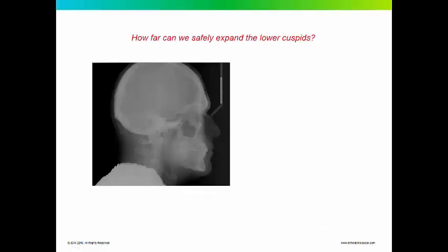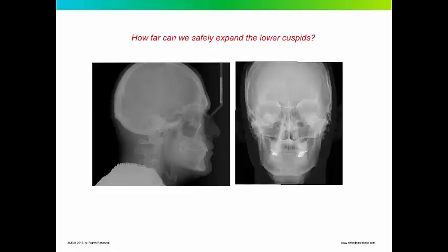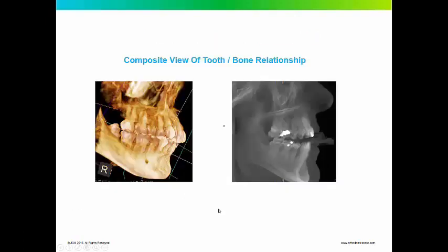Cephalometric x-rays don't give us much information regarding lower cuspid expansion. You could take a posterior-anterior view, but I find these very difficult to read and of very limited value. Part of the problem is the focal trough — we're taking an image with a lot of superimposed structures. All the incisors are overlapping each other, so it's impossible to tell what's going on on an individual tooth basis.